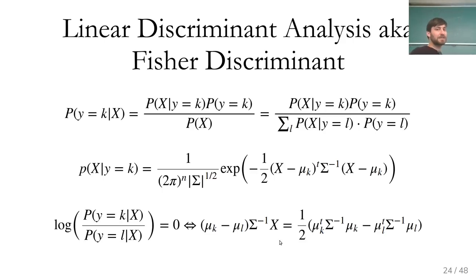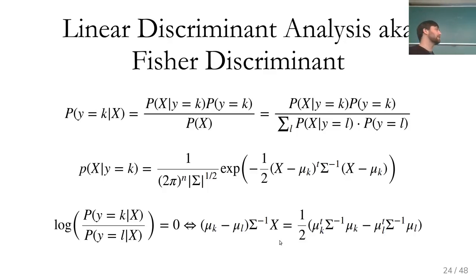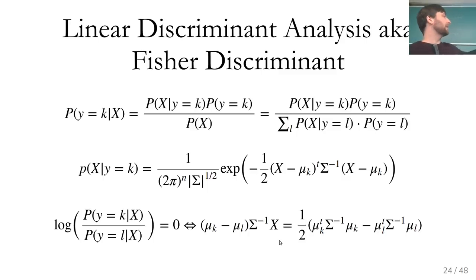Logistic regression needs an iterative solver to maximize the likelihood estimate, whereas here we just compute the means and the covariance and we're done. The expensive part is computing the inverse of the covariance matrix. A slight variant is quadratic discriminant analysis, or QDA — the difference is that QDA also has a separate covariance matrix for each of the classes, making it a more flexible version of LDA.